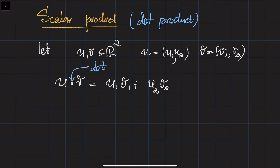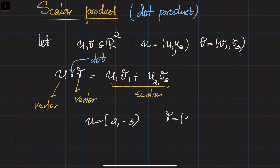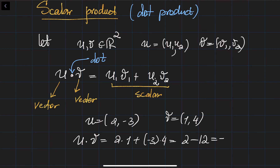This is called a scalar product because when you multiply two vectors — whether they are 2D or 3D — you get a scalar, meaning a single number. Let's do a small example: let u = (2, −3) and v = (1, 4). Then u dot v = 2 times 1 plus (−3) times 4 = 2 − 12 = −10. So these two inputs are vectors, and the result is a scalar — that's why it's called the scalar product.